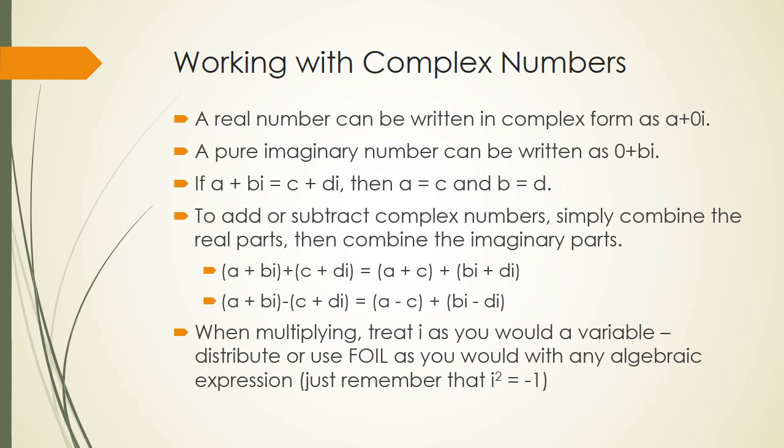When you multiply, you treat i kind of like you would a variable. You distribute or you use FOIL. But remember, it's not a variable. And i squared equals negative 1.